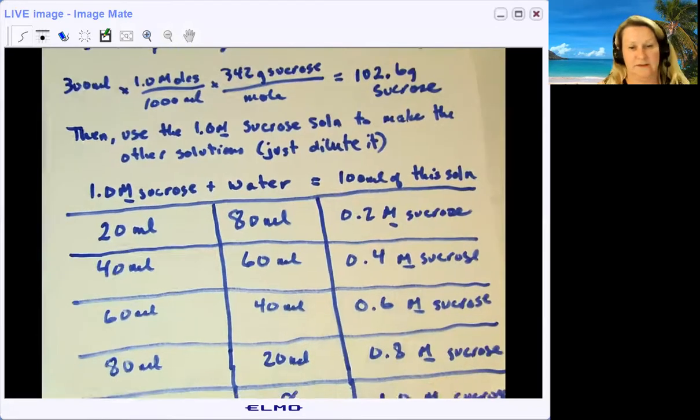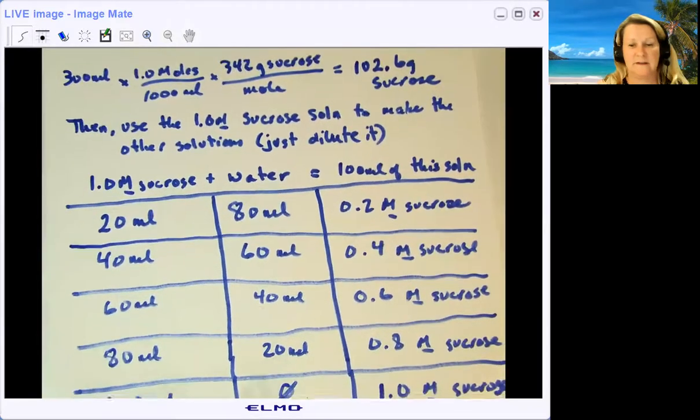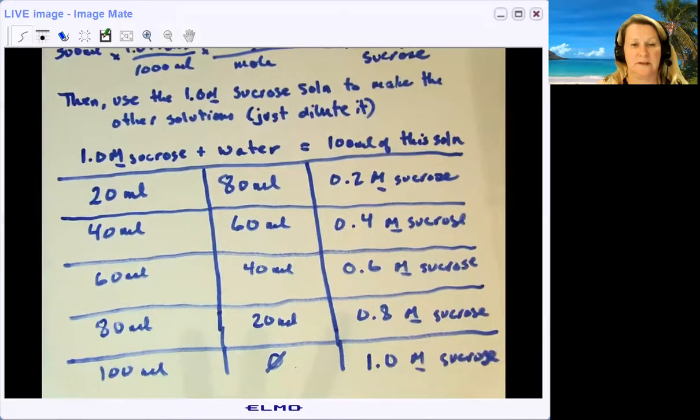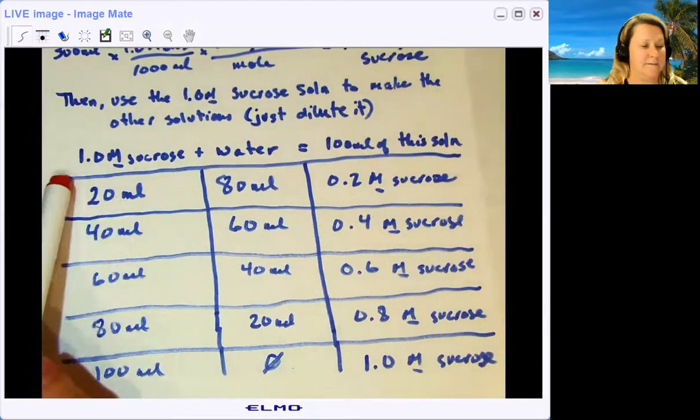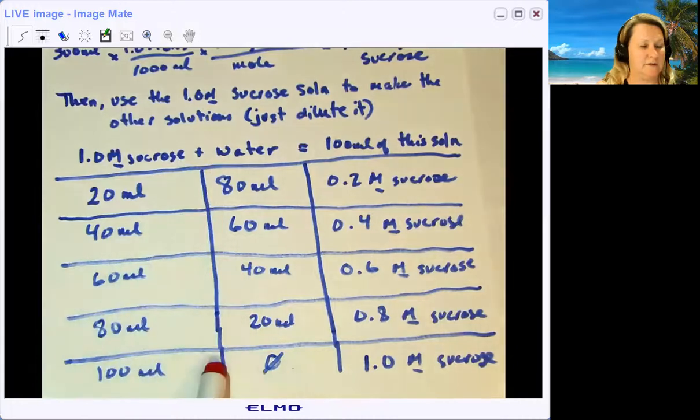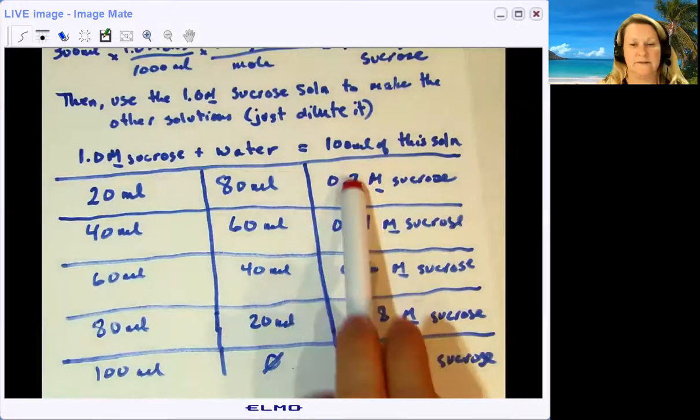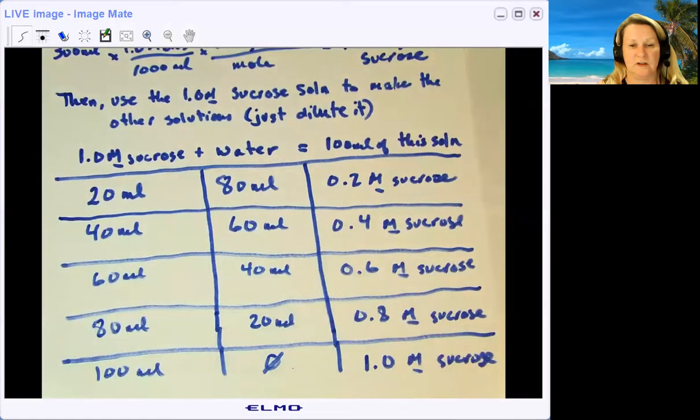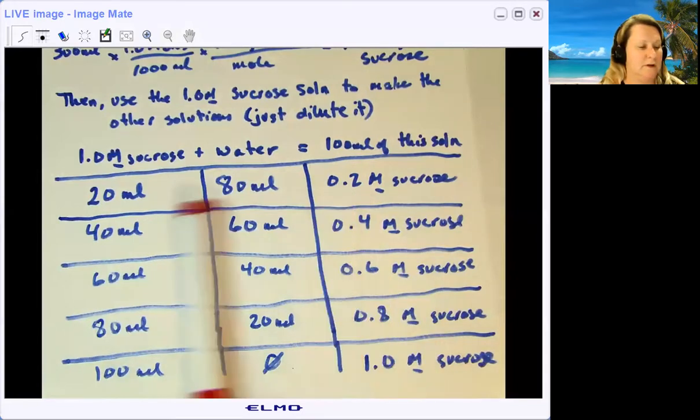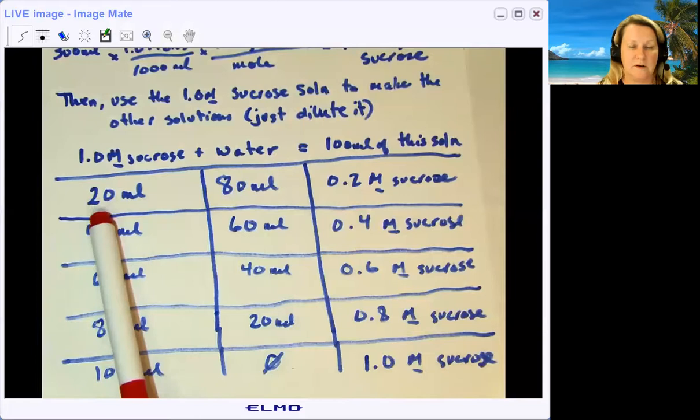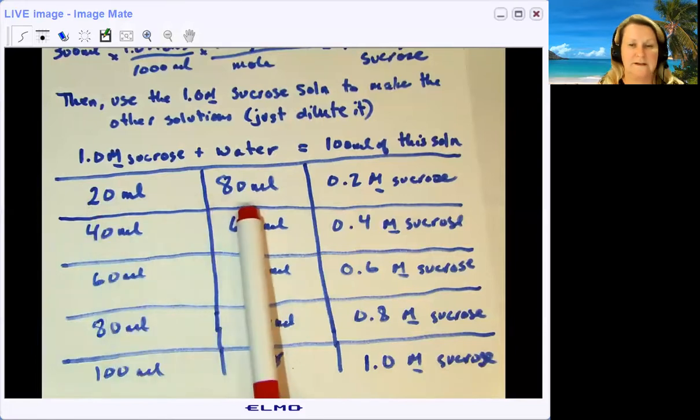In this little chart, I have the amounts of sucrose you would need, the amounts of water you would need to get 100 mils of each of these concentrated solutions. And I think you'll see pretty quickly - to get a 0.2 molar, you need two parts of the concentrated sucrose solution to eight parts of water.